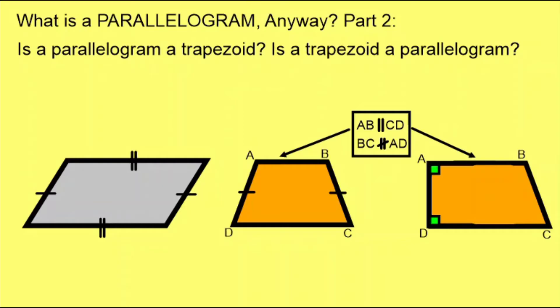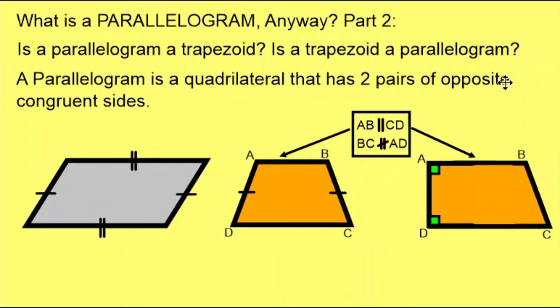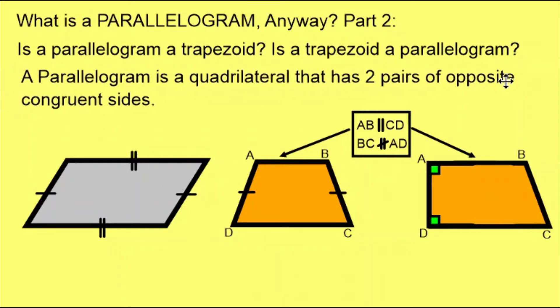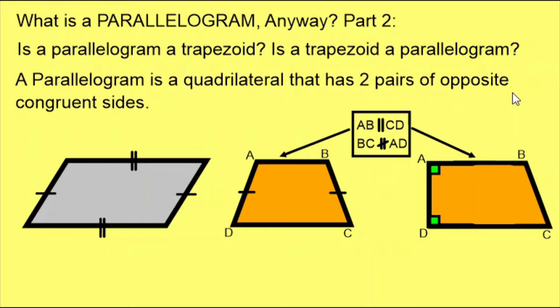Now let's look at the definition of a parallelogram. A parallelogram is a quadrilateral that has two pairs of opposite congruent sides. We can see that our light gray parallelogram is following this rule. It is indeed a parallelogram.